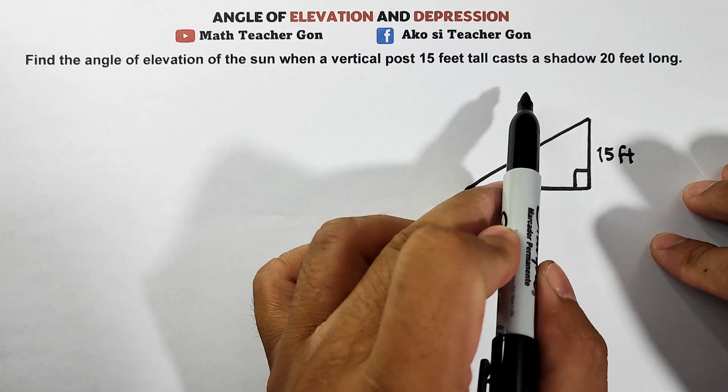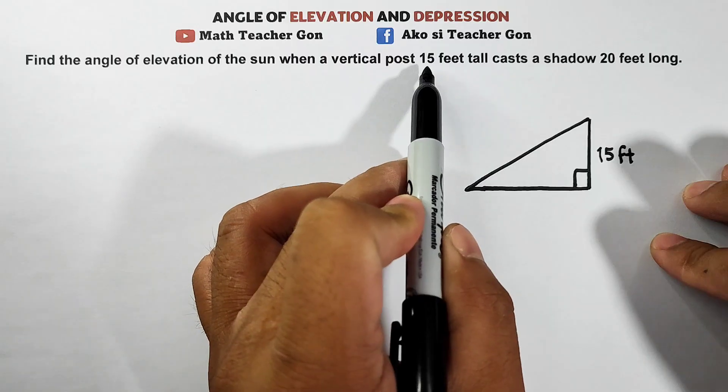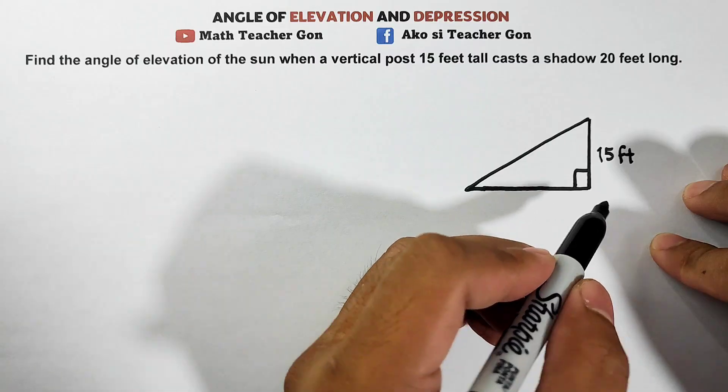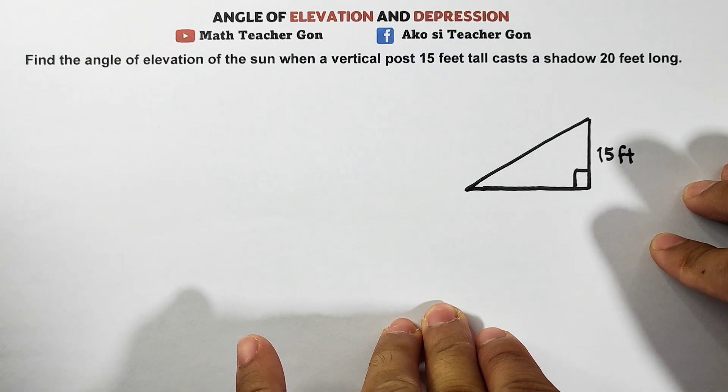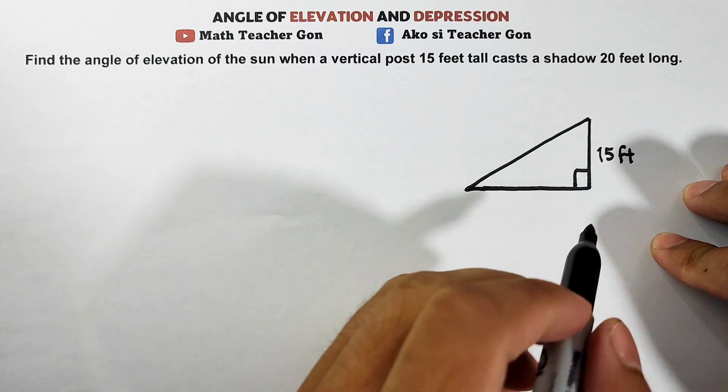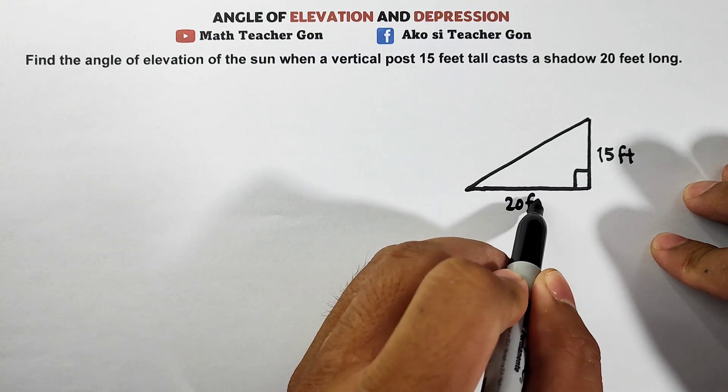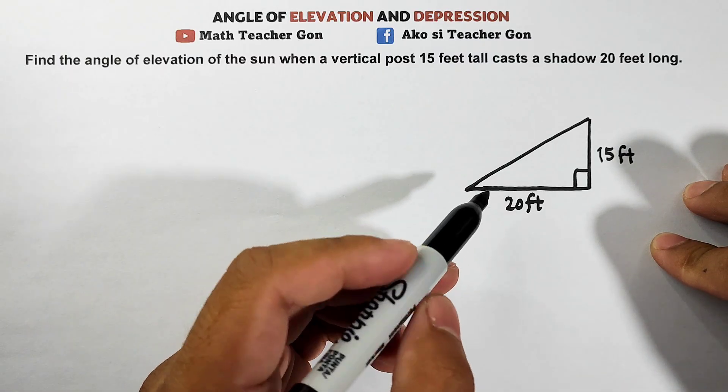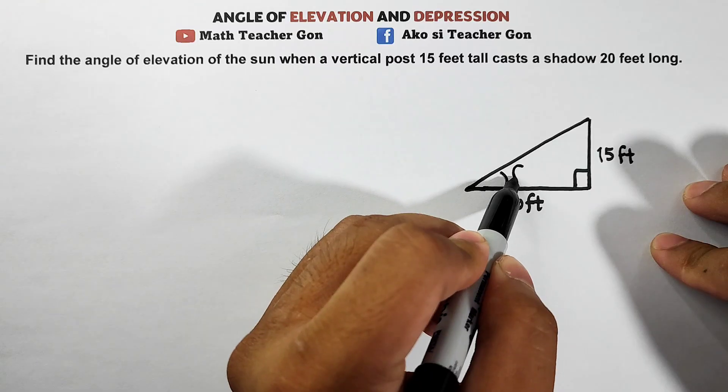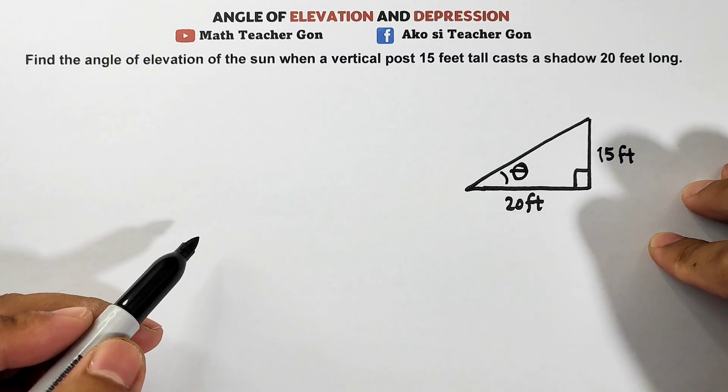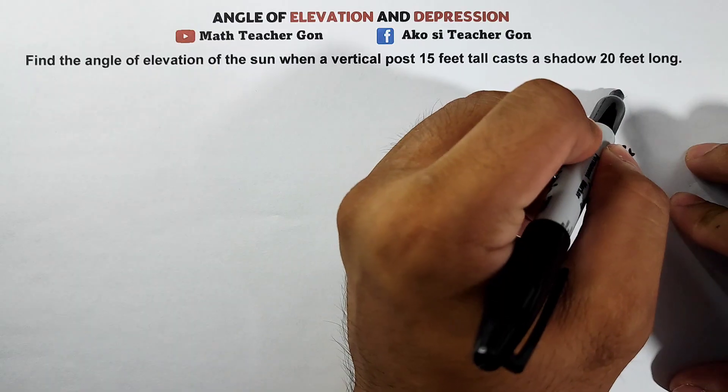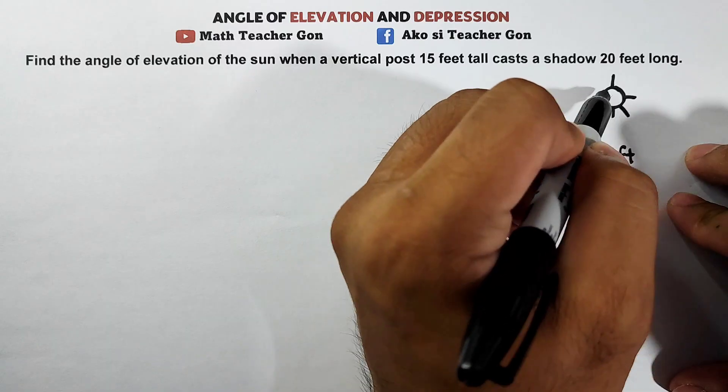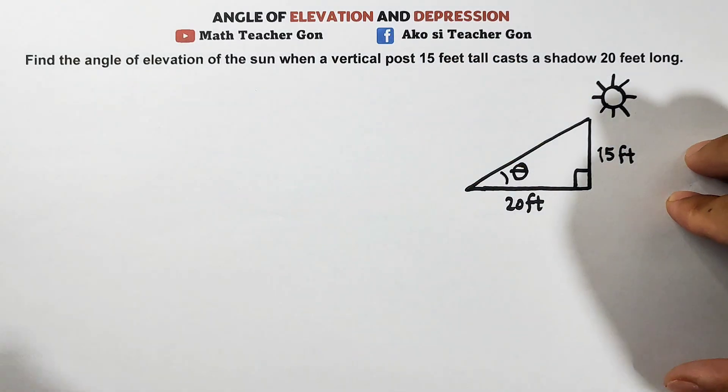Next, it says a vertical post 15 feet tall casts a shadow of 20 feet long. This isn't the 20 feet long. The 20 feet long is the shadow that forms from any object parallel to the ground. Meaning this is our 20 feet. This is your 20 feet. The question asks, find the angle of elevation. Of course, our angle of elevation is here. This is what we're looking for. We will represent this as angle theta. Because the sun is here.